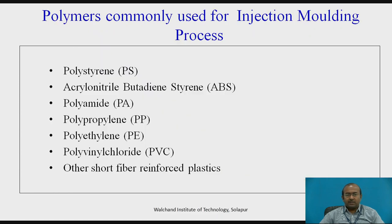Now let us see the polymers commonly used for the injection molding process: polystyrene, polyamide, polypropylene, polyethylene, and many others. These are the common polymers used for injection molding.